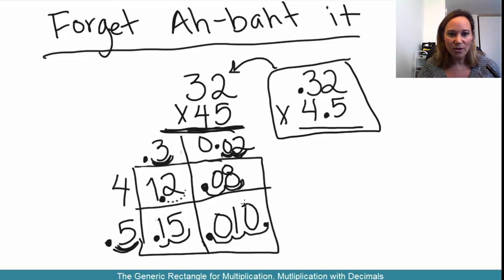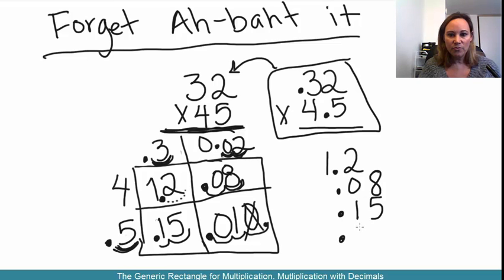Now remember, you don't actually need that number. So adding these up, I have 1.2, 0.08, 0.15, and 0.010. I could put the zero there but I don't really need to. If I do that, it's just going to end up being zero which is unnecessary, so I'm not even going to write it.